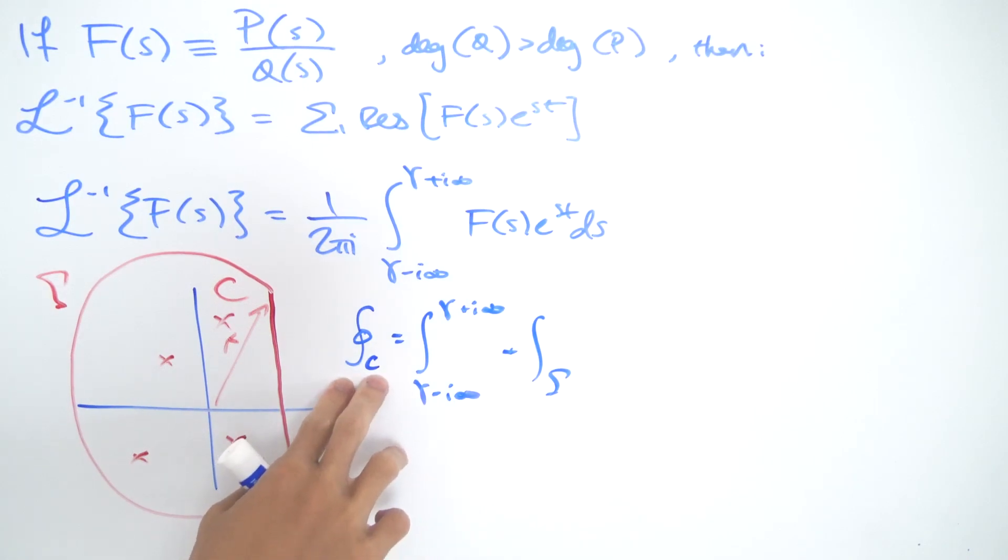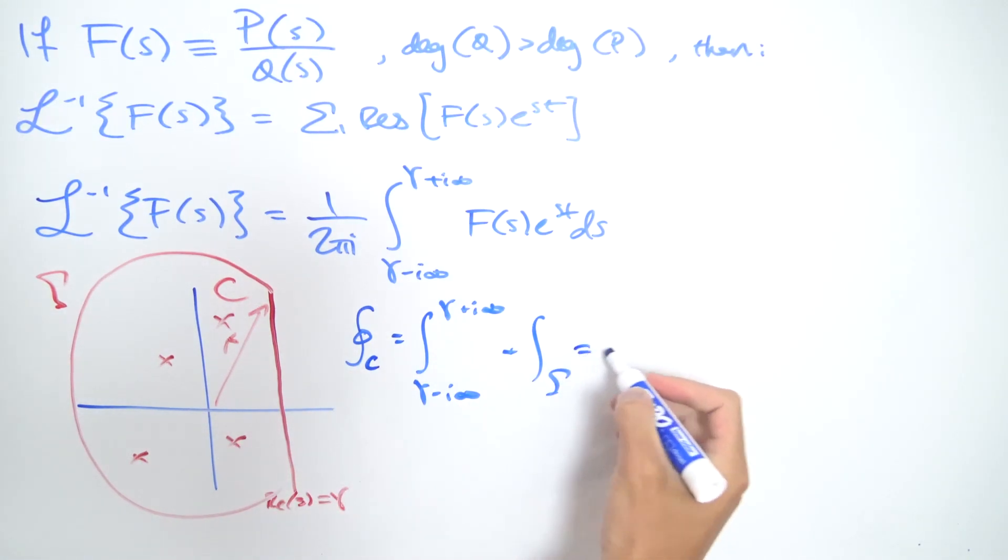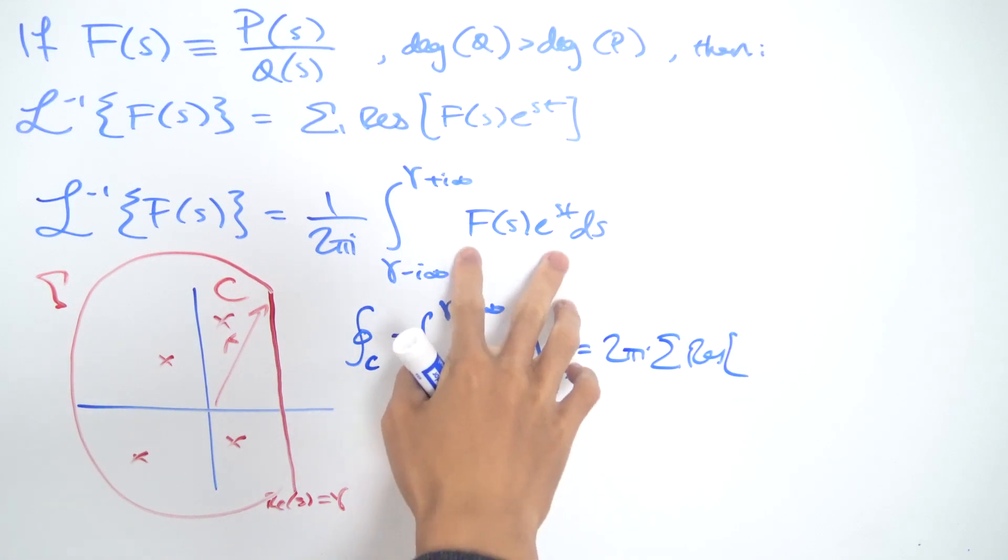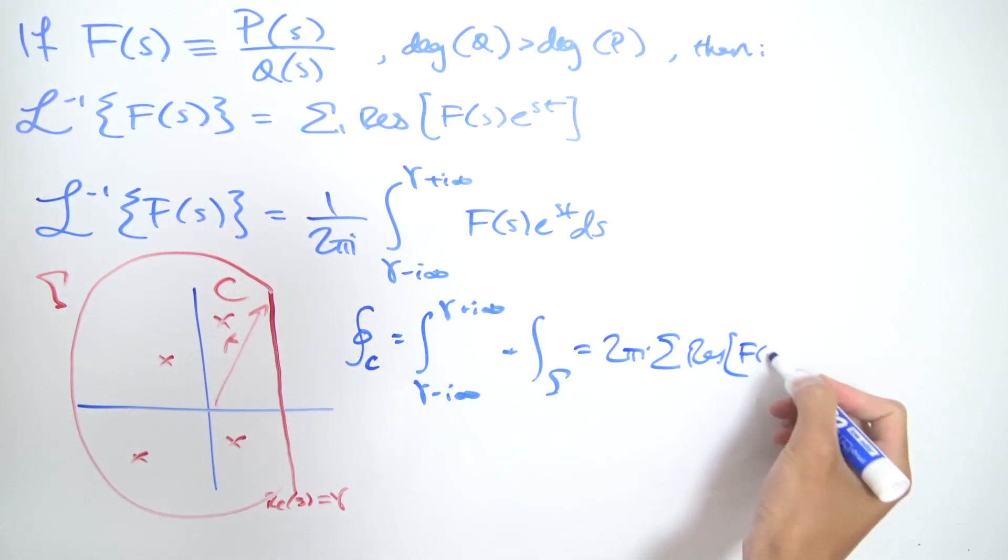But we know that the contour integral can also be evaluated by considering 2πi times the sum of all the residues of the function we're dealing with, which is the integrand. So F(s) times e^(st).